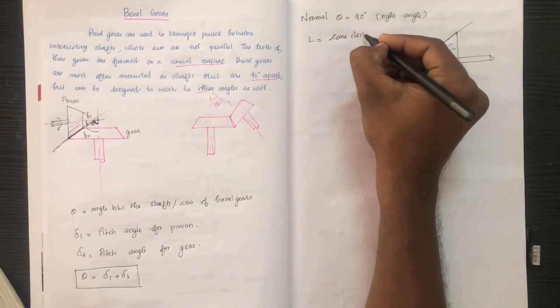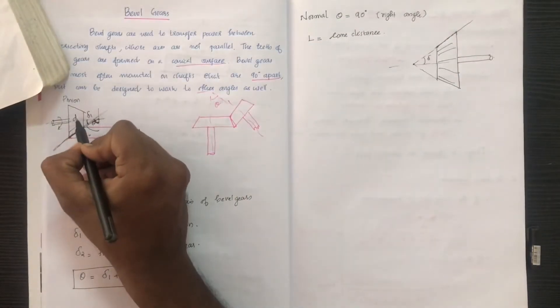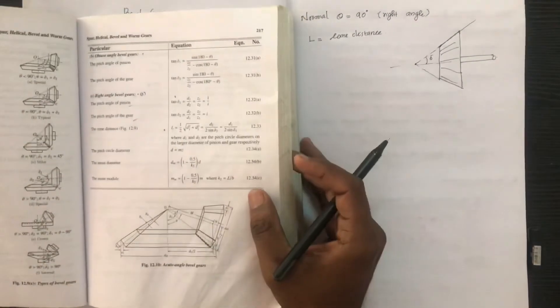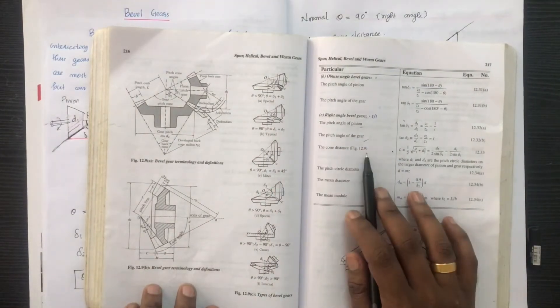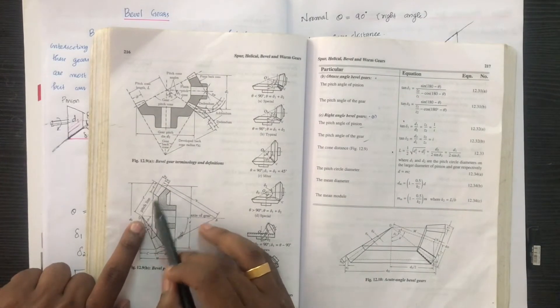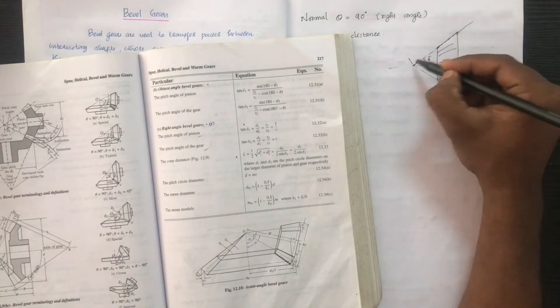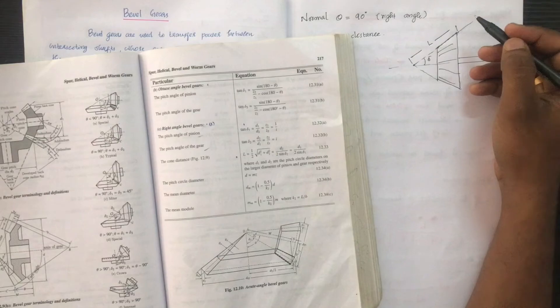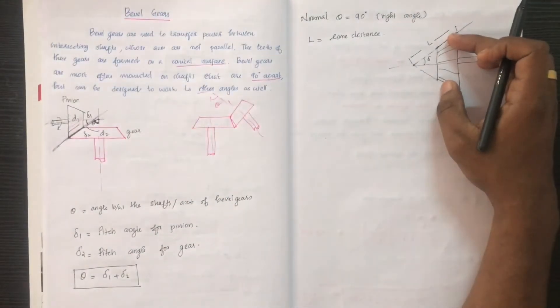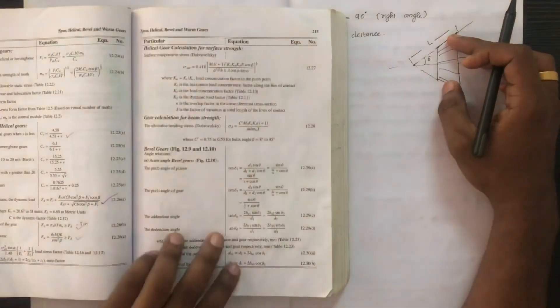We are defining L, known as the cone distance. The cone distance L is defined in terms of the diameters D1 and D2. If the cone has a slant height, that means we have the capital L and cone distance. The cone has a surface, and this is very important.